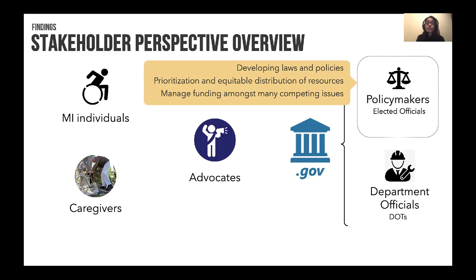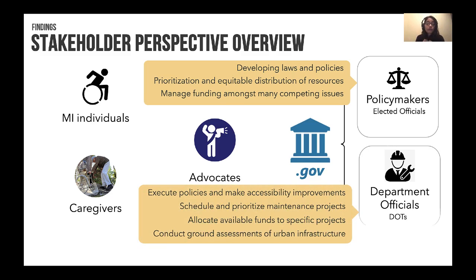On the government side, policy makers were responsible for developing laws and policies. They prioritized and distributed resources equitably and managed funding amongst different competing issues. Meanwhile, department officials executed policies, made accessibility improvements, and also did the groundwork of assessing the infrastructure as well as making repairs.